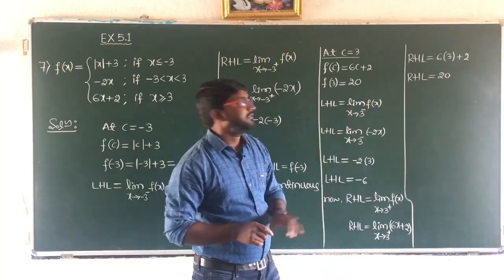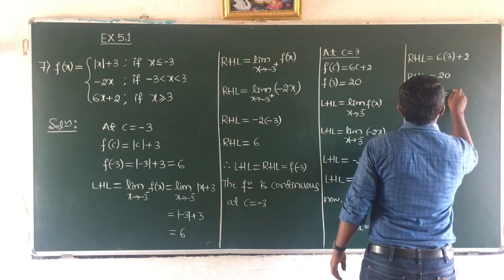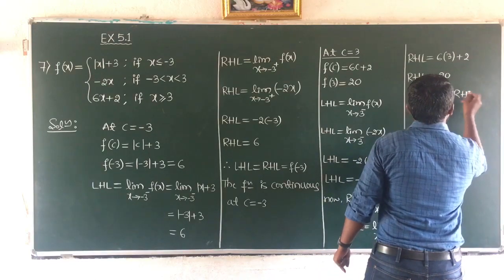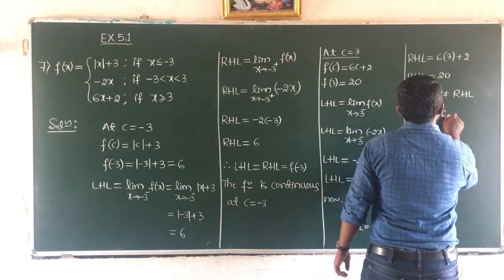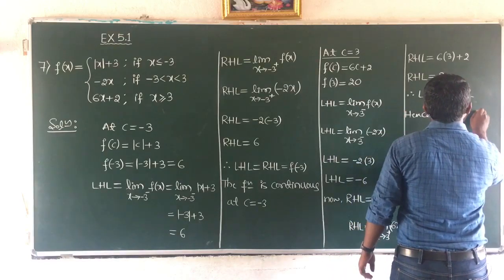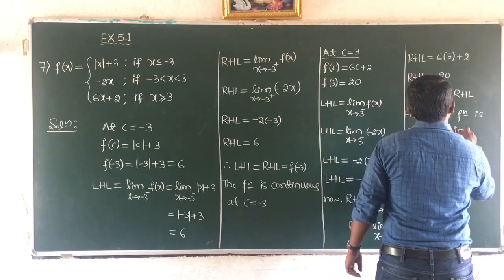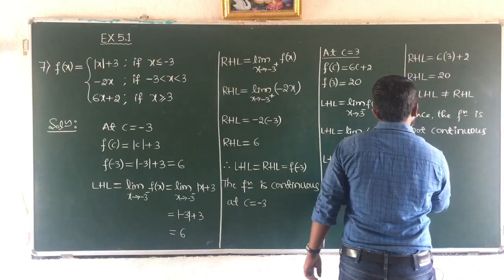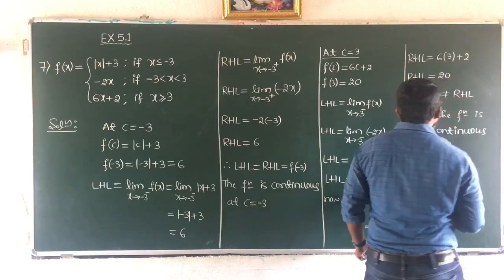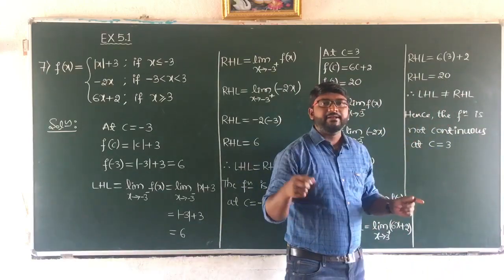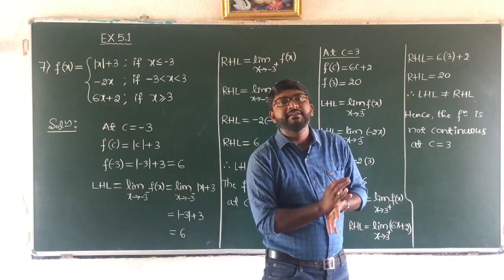Therefore, the function is not continuous at c equal to 3. LHL is not equal to RHL, hence the function is not continuous at c equal to 3. The function is continuous at all the points except at c equal to 3, meaning x equal to 3 is the only point of discontinuity.